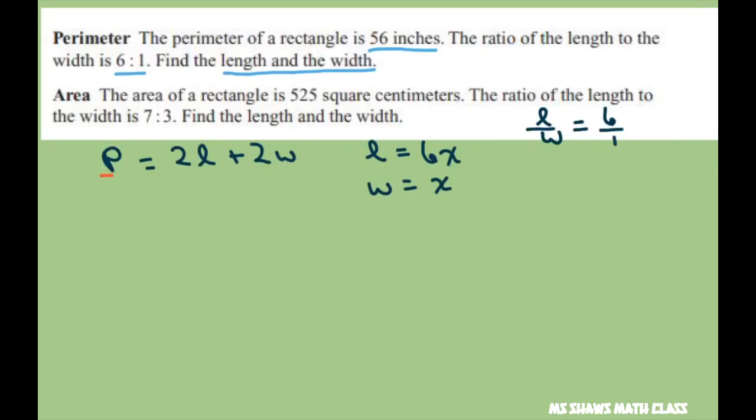So perimeter is 56 inches, our L is 6X, and our W is just X. Simplifying, we get 56 equals 12X plus 2X.